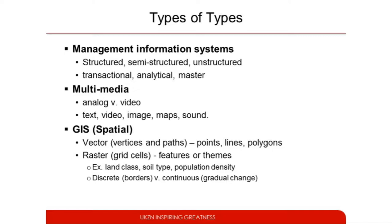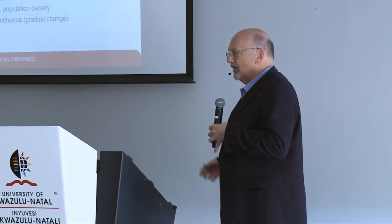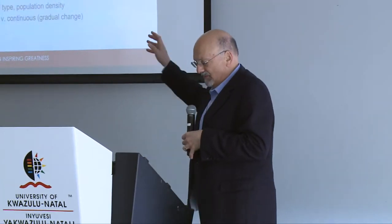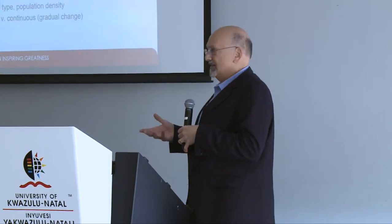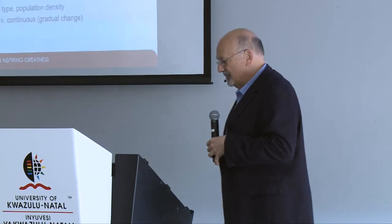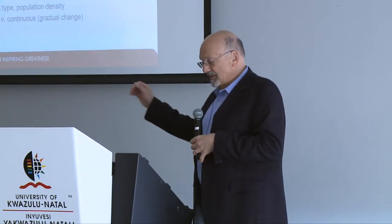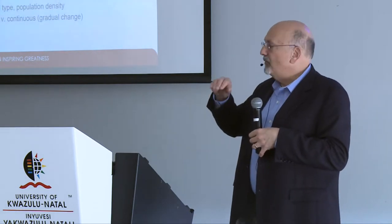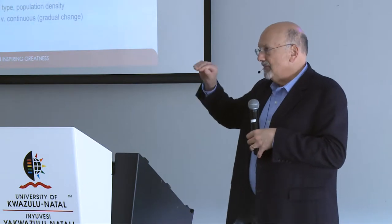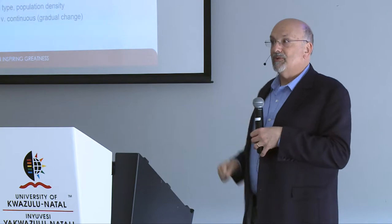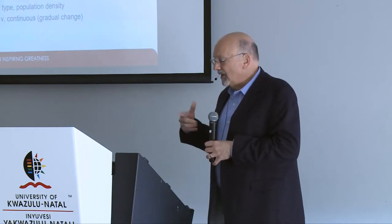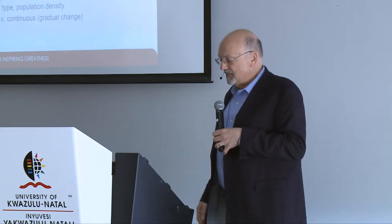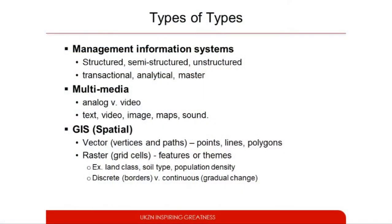Then you get into more applied types of data often associated with specific fields. When talking about data captured by an organization within their information systems or management information systems, they refer to things like structured data versus semi-structured and unstructured data. Structured data is the kind of file you usually think of for analysis, where certain characteristics of each column define the record or describe its attributes. There's also the transactional versus analytical and master types distinction, which is important for our work.